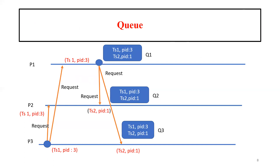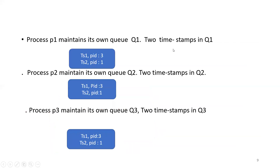All processes maintain their own queue. Here, with three processes P1, P2, and P3, there are three queues: Q1, Q2, and Q3. The timestamp values TS1, TS2 and process IDs PID3 and PID1 are stored in the queues. Process P1 made its own queue Q1 with two timestamps TS1 and TS2, and PID3 and PID1 are the IDs of processes P3 and P1. Similarly, P2 and P3 also made their own queues Q2 and Q3.